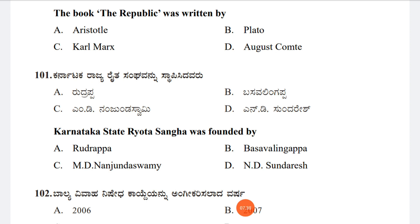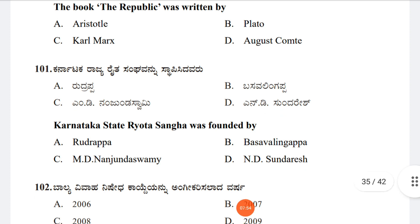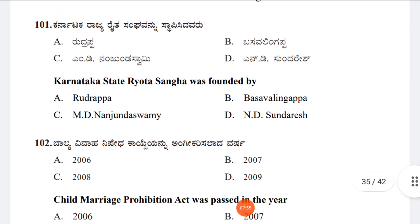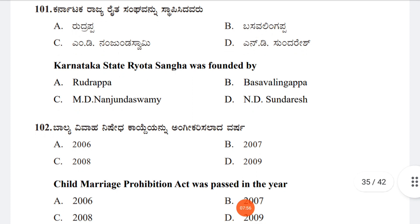Question 101: The Karnataka State Raita Sangha was founded by Option A: Rudrappa, Option B: Basavalingappa, Option C: M.D. Nanjunda Swami, Option D: Tundirash. Option C is correct — M.D. Nanjunda Swami was the founder of Karnataka State Raita Sangha.